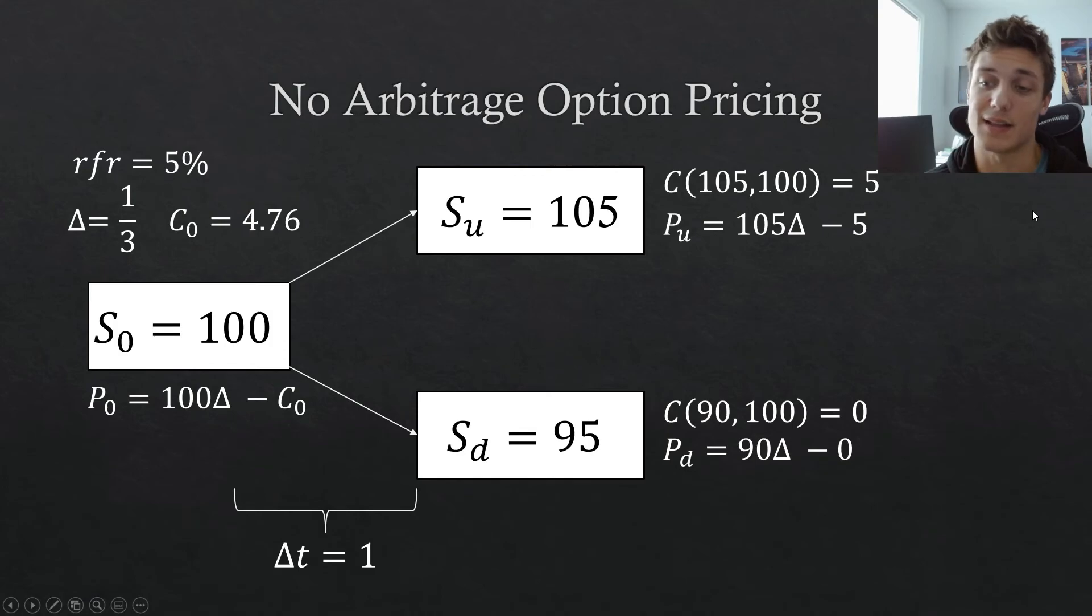So number one is no arbitrage. Number two is this notion of delta. Delta is going to be a very large topic of conversation going forward, especially when we start to derive the Greeks from the Black-Scholes model. But for now, the entire reason that no arbitrage pricing was even possible was because we were able to hold delta shares in this portfolio, setting the portfolio equal to each other in either state of the world, developing this risk neutral portfolio to find the no arbitrage price. And delta in this case, we didn't come up with any sort of generalized equation for it. So that's actually going to be the next step before moving on to the full scale binomial pricing model. So the second thing to take away is this notion of delta, which develops risk neutrality in our portfolio.